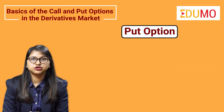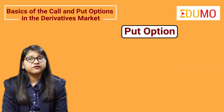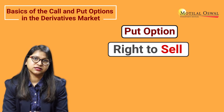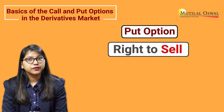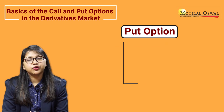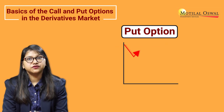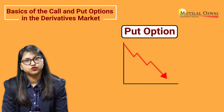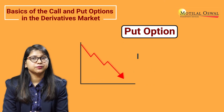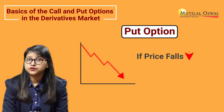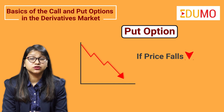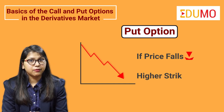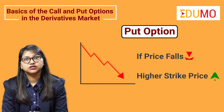On the other hand, a put option contract is the one where we get the right to sell the underlying securities at a fixed price. As a buyer, we should buy a put option when we believe that the prices of the underlying securities will fall in the future. This is because if the price falls in the future, then we will be able to sell the securities at a strike price which is higher than the market price, thus making a profit.